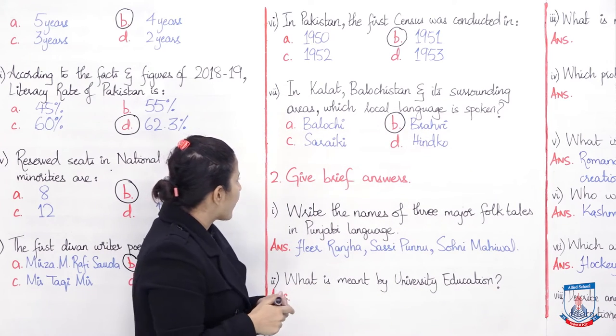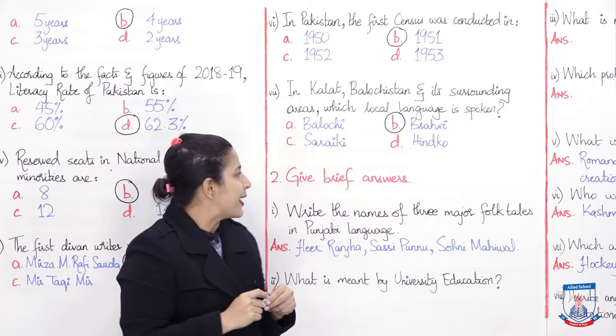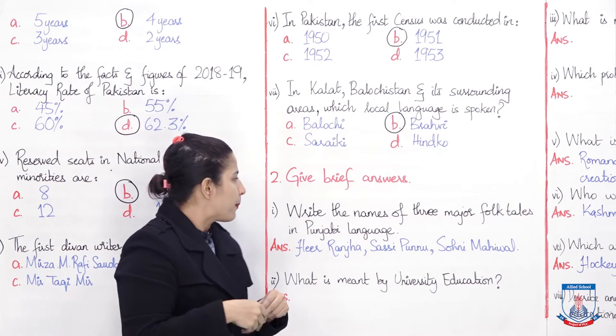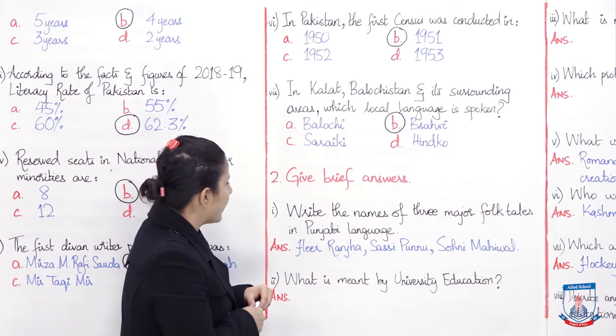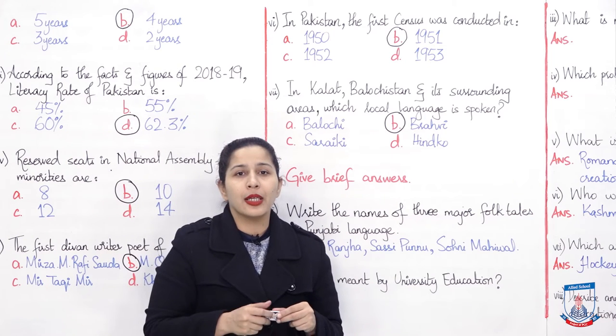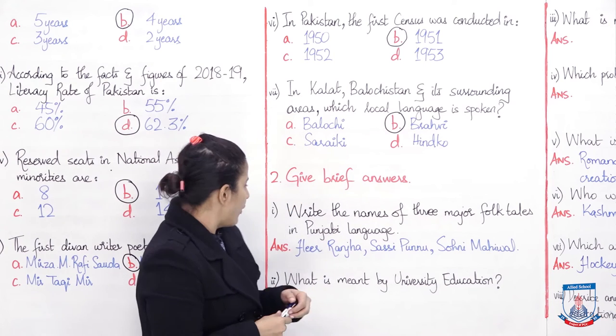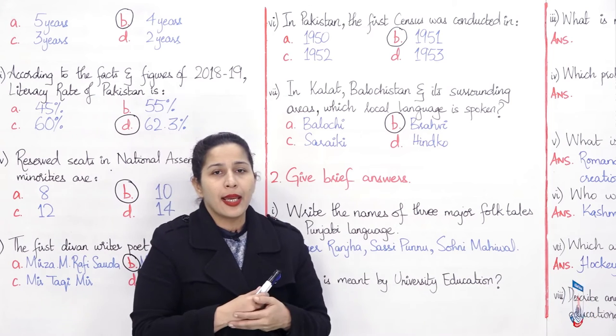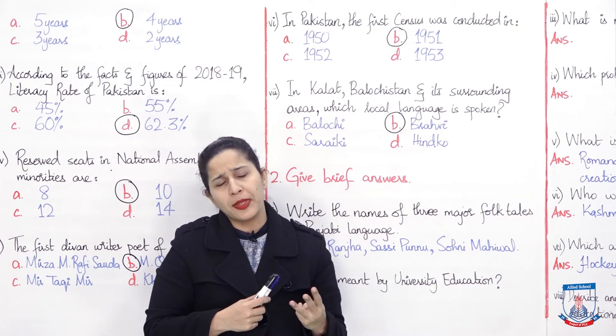Let's move on to the second part of the objective section. It says give brief answers. You have to give short answers, maximum two to three lines. The first question is: Write the names of three major folk tales in Punjabi language. Here I have Heer Ranjha, Sassi Punno, Sohni Mahiwal, and you can talk about Mirza Sahiba as well. There are four major ones. You can write any three of them.